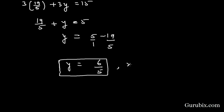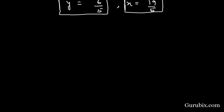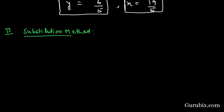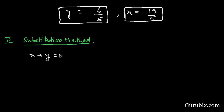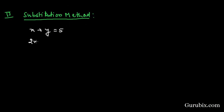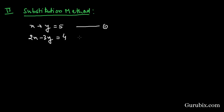So x = 19/5 and y = 6/5 is the solution by the elimination method. Now we shall apply the substitution method to the same pair of linear equations: x + y = 5 (equation 1) and 2x - 3y = 4 (equation 2).